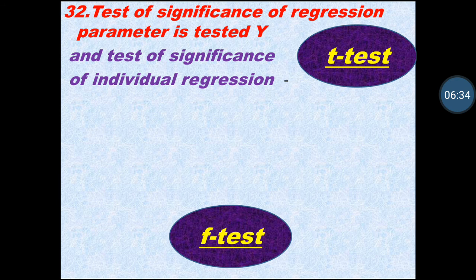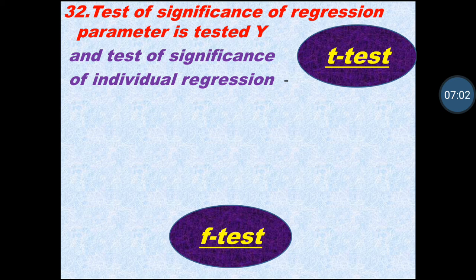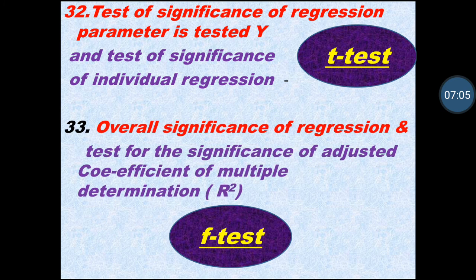If the question asks about the test of significance of a regression parameter or individual regression coefficient, the answer is the t-test. For the F-test, questions can come in two ways: overall significance of regression is the F-test, and the test for significance of the adjusted coefficient of multiple determination (R-squared) is also the F-test.